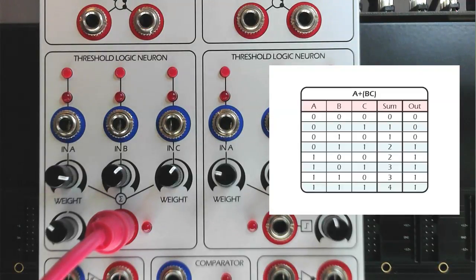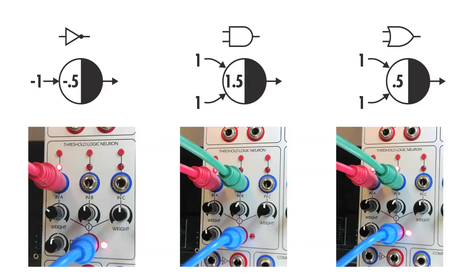A 3-input neuron has 8 possible input state permutations, so let's look at the truth table for the expression we have set up. Of course, fewer than 3 inputs can be used.